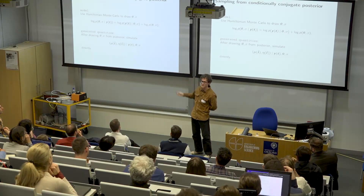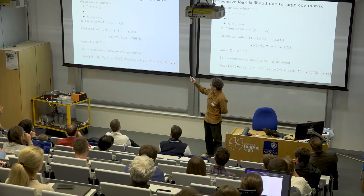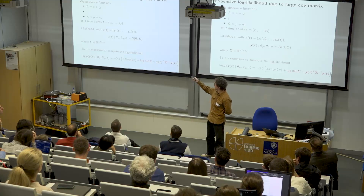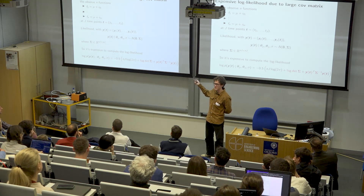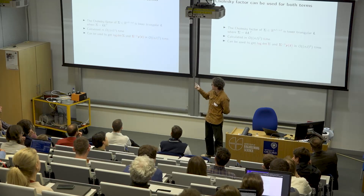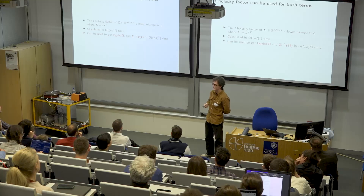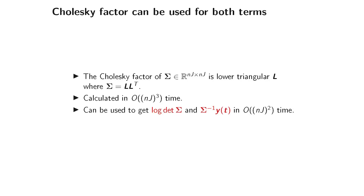So why is it so slow? Let's say we observe n functions f_1 to f_n at j time points t_1 to t_j. The likelihood involves a multivariate normal with a covariance matrix Sigma that is an nj × nj matrix. With a hundred functions at a hundred time points, that's a 10,000 × 10,000 matrix. Calculating the log determinant and the quadratic form scales as O(n³j³) because we need the Cholesky factor of the entire matrix Sigma — that's what we want to avoid.